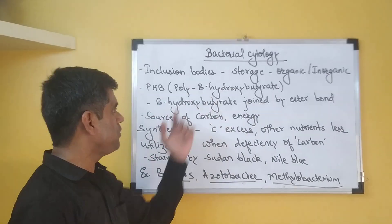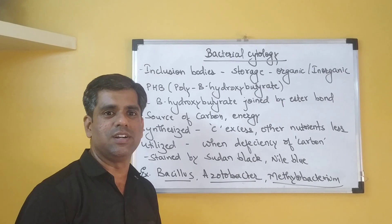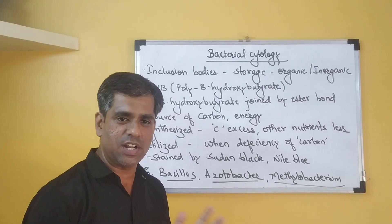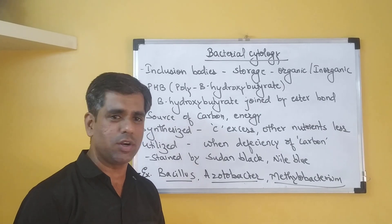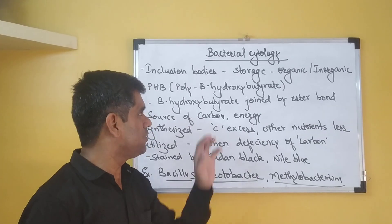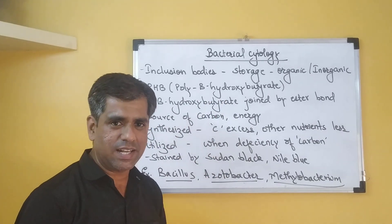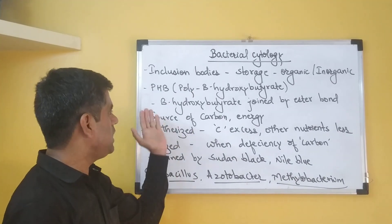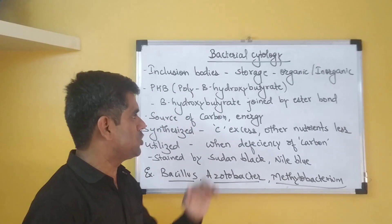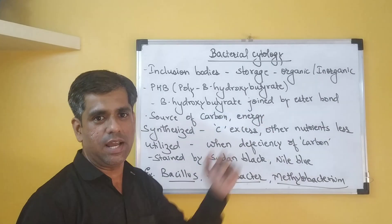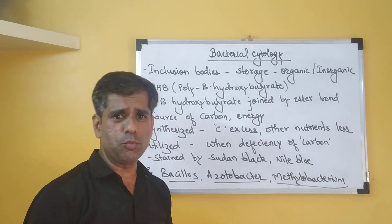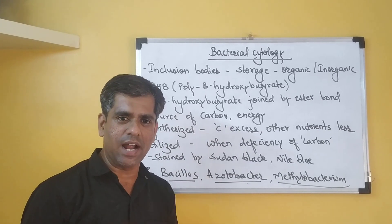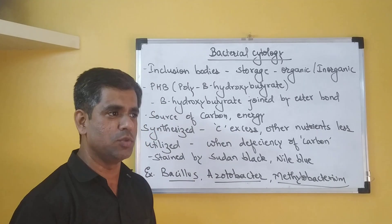PHB, called poly-beta-hydroxybutyrate, was first discovered, isolated, and characterized in 1925 by French microbiologist Maurice Lemoigne. Its worth was not recognized much at that time, but today we know that PHB is nothing but beta-hydroxybutyrate molecules joined together by an ester bond. This ester bond is found between the monomers which are joined with the carboxyl and hydroxyl groups of the adjacent molecules.